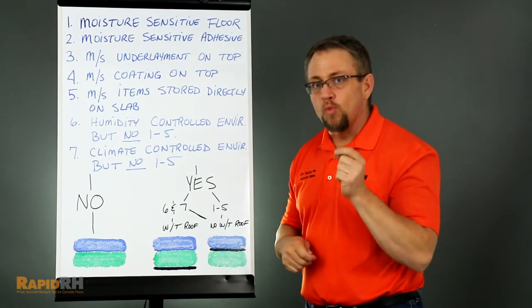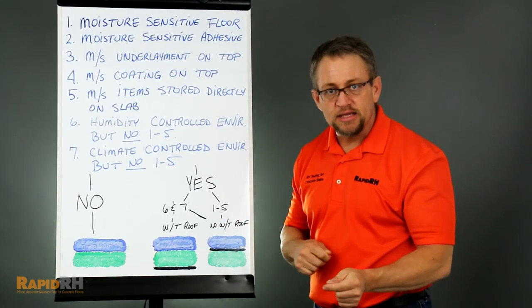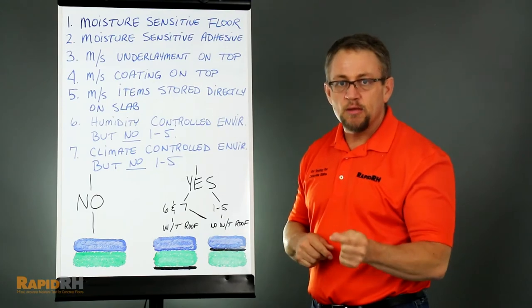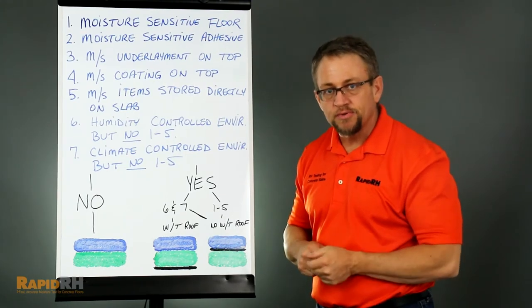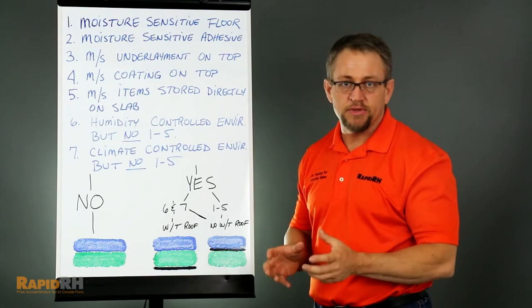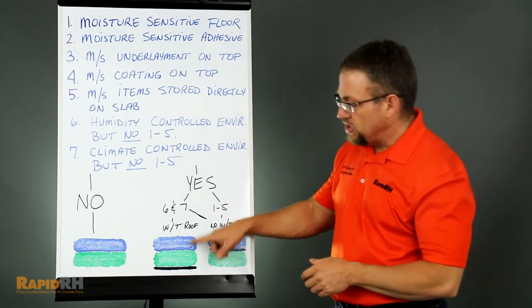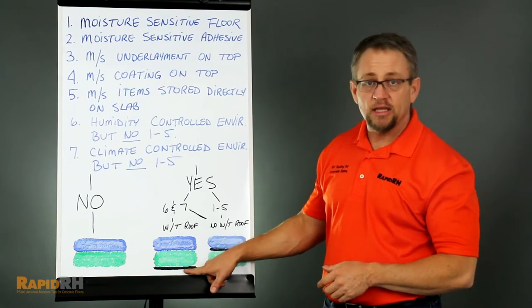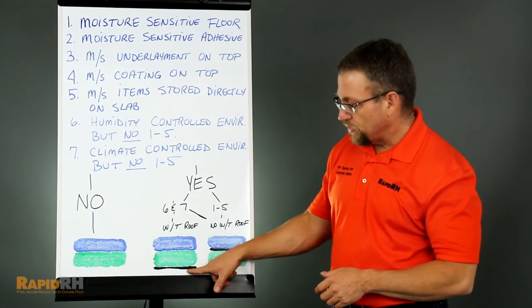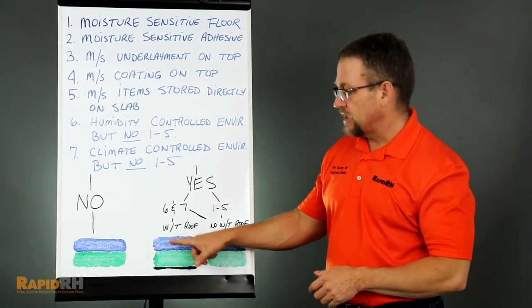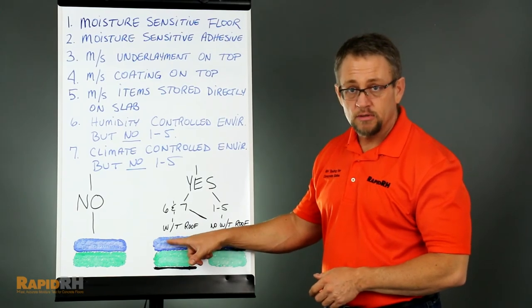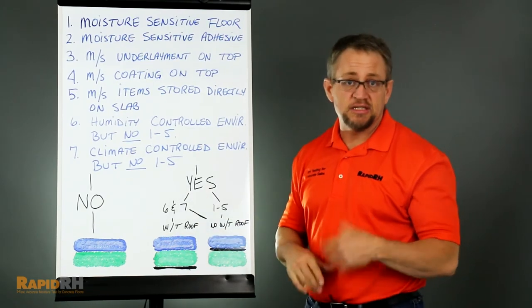If that's the case, there's one additional question that needs to be asked: Is the slab and is the sub-base going to be placed with a water-tight roofing system in place? If the answer to that is yes, then you can actually have a slab designed like this, which is vapor retarder, the sub-base, and the concrete directly on top of it.